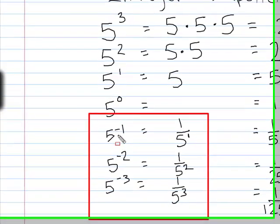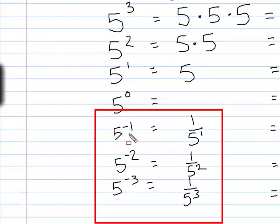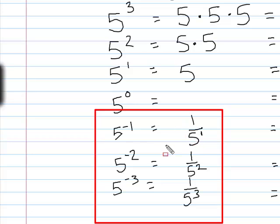Notice the relationship here: five to the negative one is one over five to the first; five to the negative two is one over five to the second; five to the negative three is one over five to the third. So if you have a negative exponent and want to write it with a positive exponent, you put a one on top and it becomes a positive exponent.